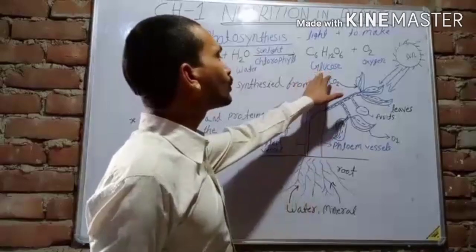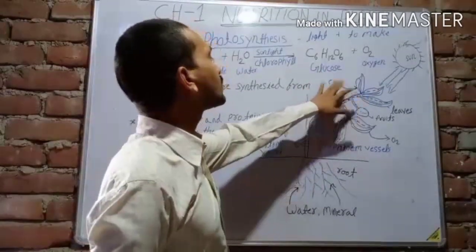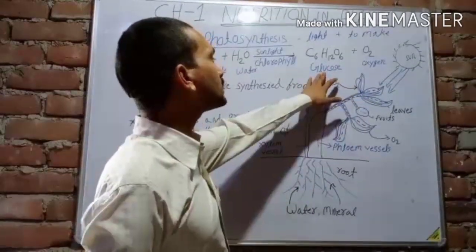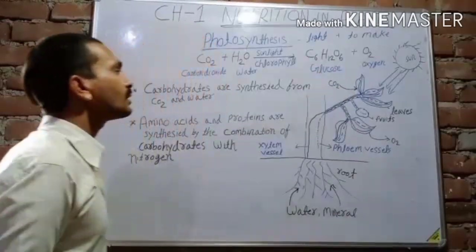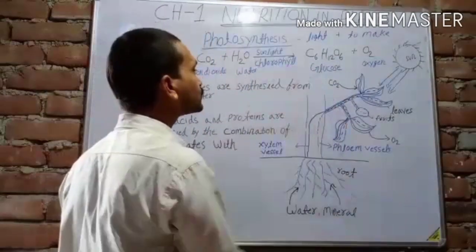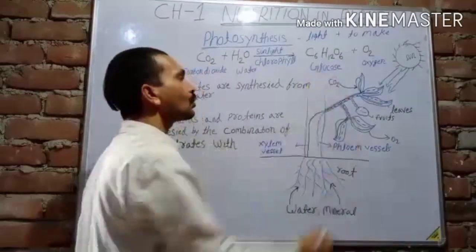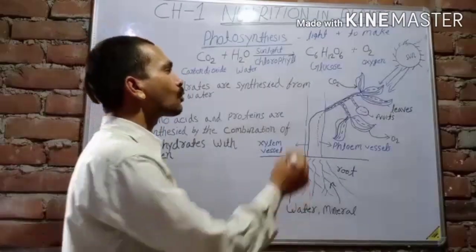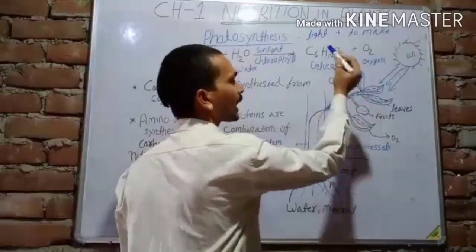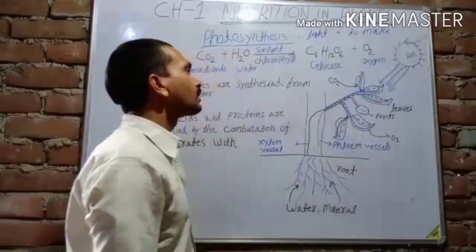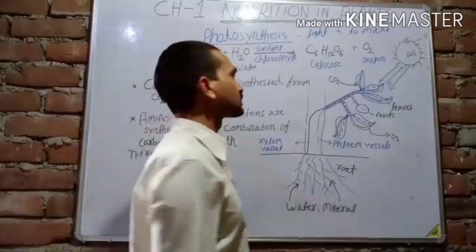They are converted into food, which is stored by the plant leaves. This food is known as glucose. When plants make their food in the form of glucose, they also release oxygen gas, which is helpful for us.